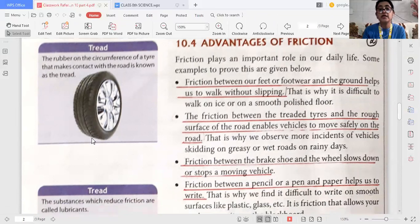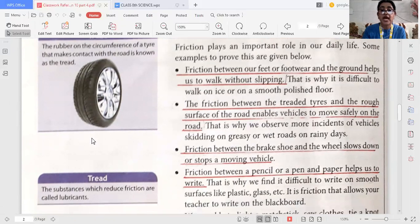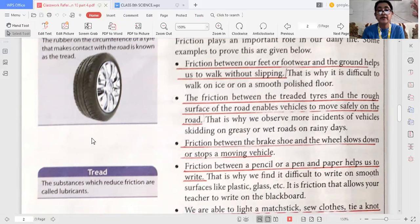The friction between the treaded tires and the rough surface of the road enables vehicles to move safely on the road. Friction between the brake shoe and the wheel slows down or stops a moving vehicle, and friction between a pencil or a pen and paper helps us to write. Otherwise it is very difficult to write on a smooth surface like plastic or glass. So friction helps us in many ways.